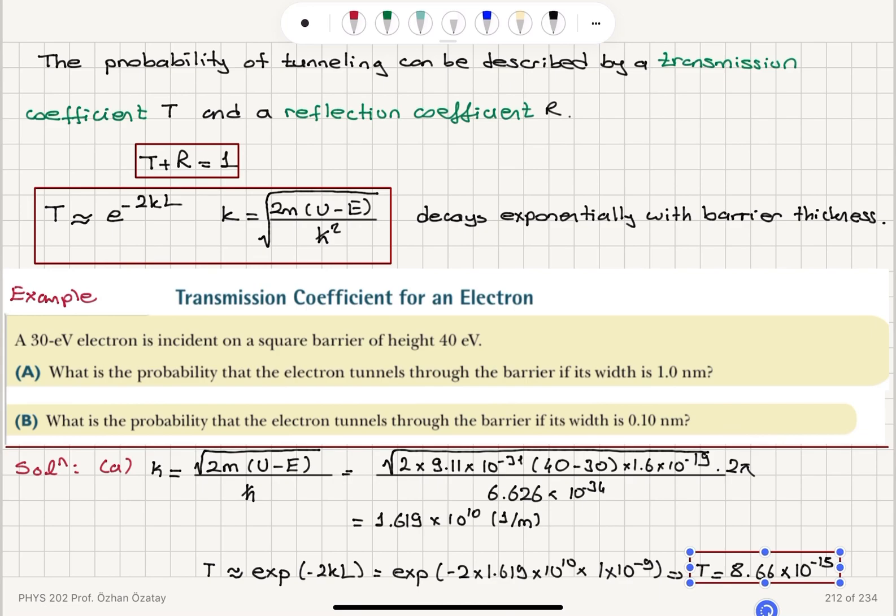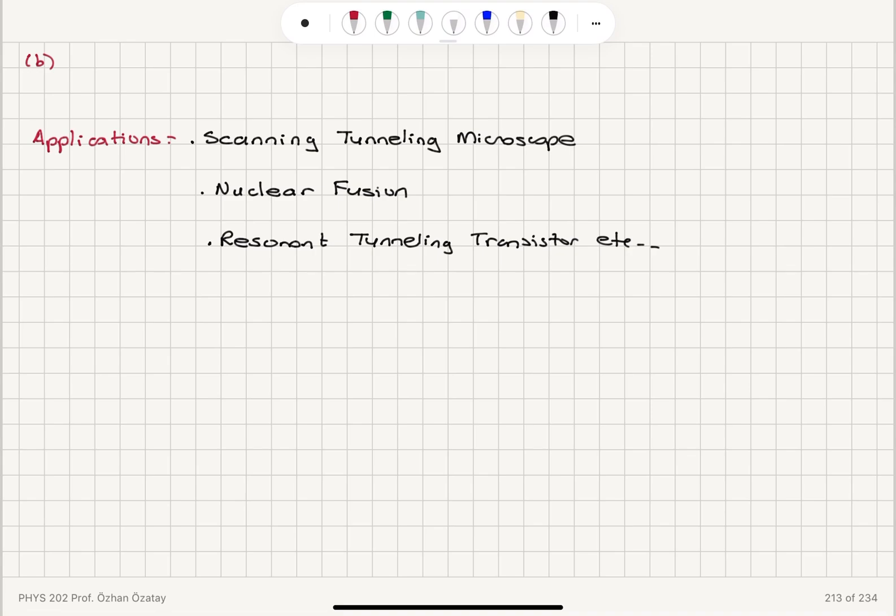Now, in part B, we're changing the width to 0.1 nanometers. The same formula applies, just L changes.